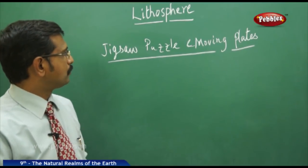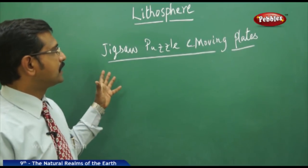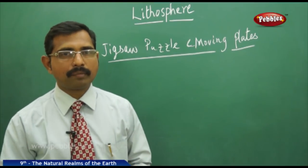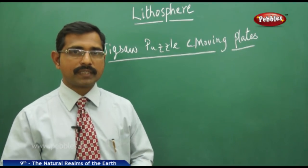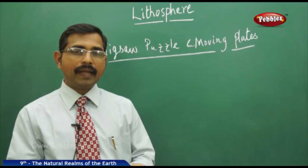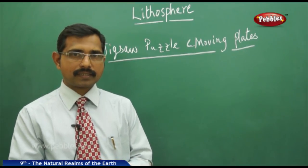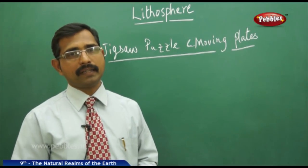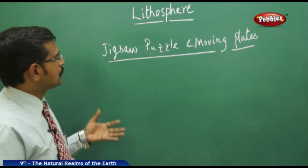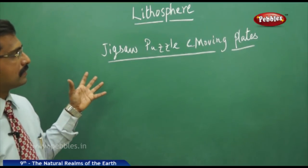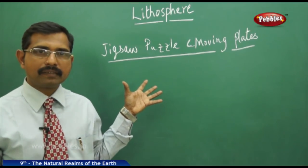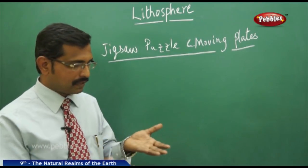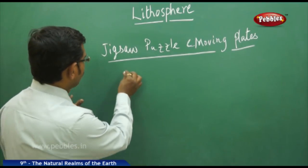Now we look at the jigsaw puzzle and moving plates as we discussed. Continents and oceans are laying on the Earth's crust on six major plates and some other minor plates. The jigsaw puzzle concept says that continents look like pieces of land that fit together.